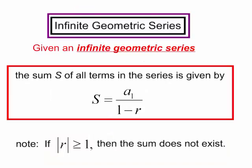So once again, to find the sum of all the terms in an infinite geometric series, the sum will equal a sub 1 divided by 1 minus r.